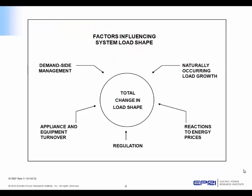In addition to demand-side management, there are a number of other factors that influence system load shape. One is naturally occurring — changes made because consumers buy new appliances and devices. It might be because of increasing growth in a hot area, like in the southeast or in the California valleys, where the building naturally has to have air conditioning. That will change the pattern and amount of total demand for that region. It might be appliance and equipment turnover — buying new stuff, replacing old, the new being more efficient, and sometimes carrying a slightly different pattern of demand.